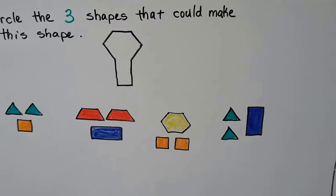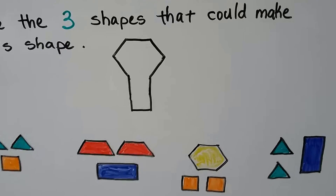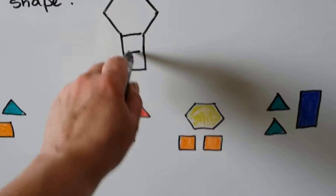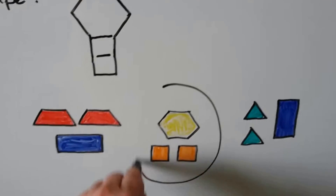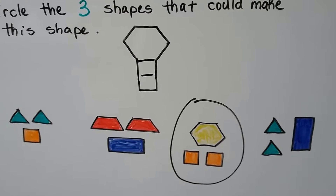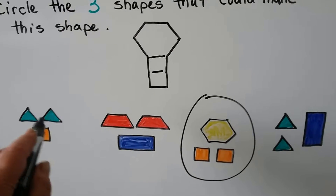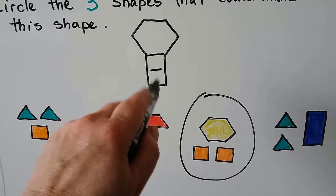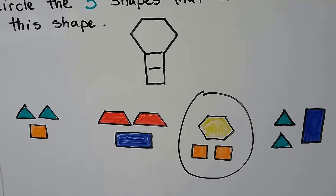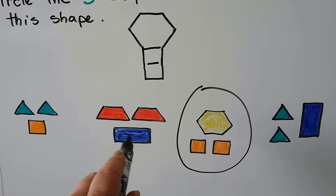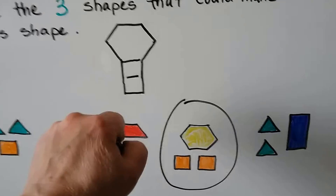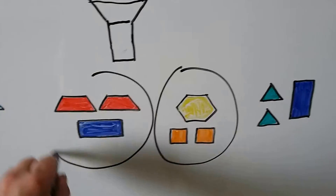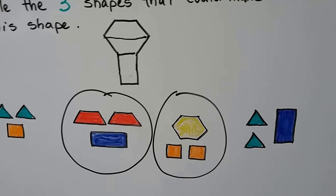Circle the three shapes that could make this shape. We could draw lines to find the shapes in here — I see a hexagon and two squares, so that would work. The two triangles would be too small, and we'd need two squares but there's only one, so that one won't work. What if we put two trapezoids together to make the hexagon and then used this rectangle? That would work — a rectangle and two trapezoids. So we could make that shape in different ways.